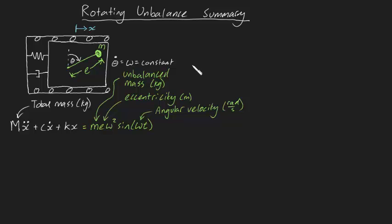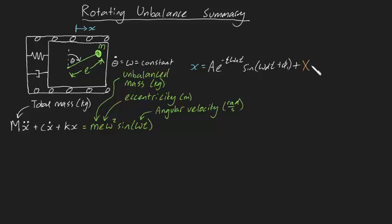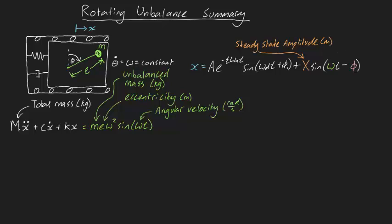Solving this ODE gives us x equals A e to the minus zeta omega n t, sine omega d t plus phi 1, plus capital X sine omega t minus phi. In this, capital X is the steady-state amplitude, and phi is the steady-state phase.